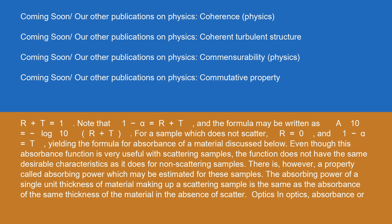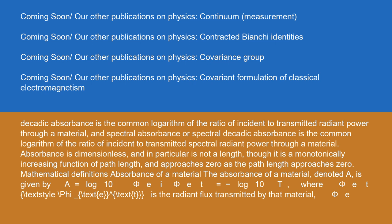Even though this absorbance function is very useful with scattering samples, the function does not have the same desirable characteristics as it does for non-scattering samples. There is, however, a property called absorbing power which may be estimated for these samples. The absorbing power of a single unit thickness of material making up a scattering sample is the same as the absorbance of the same thickness of the material in the absence of scatter. Absorbance is dimensionless, and in particular is not a length, though it is a monotonically increasing function of path length and approaches zero as the path length approaches zero.